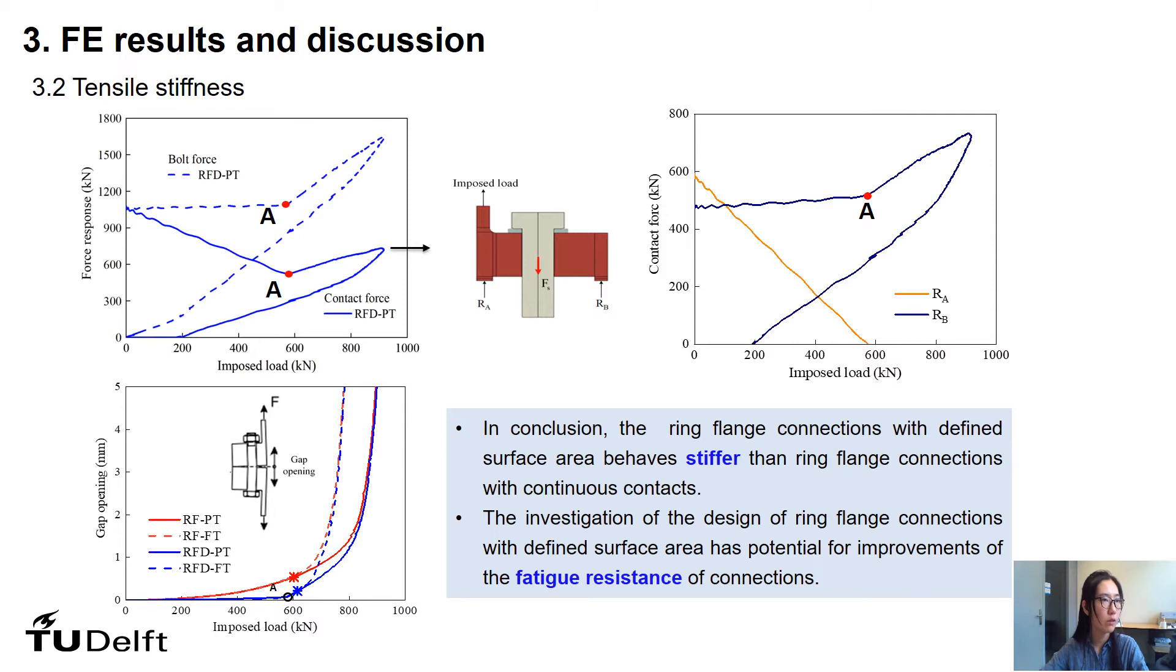When looking at the contact force as two defined contact areas of RFDPT connection, it is found that the bolt force as well as the contact force RB are almost unchanged until the contact force RA is degraded completely. After that, the bolt force increases steadily from the curve of opening of the gap between flanges as a function of the imposed load. The ring flange connection with defined surface area behaves stiffer than ring flange connection with continuous contacts. Therefore, the investigation of the design of ring flange connections with defined surface area has potential for improvement for the fatigue resistance of connections.